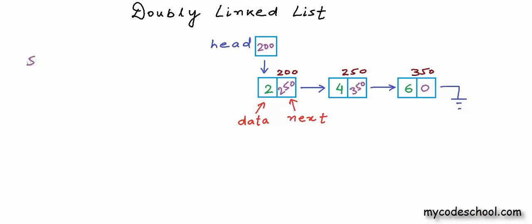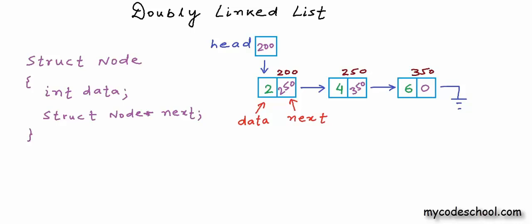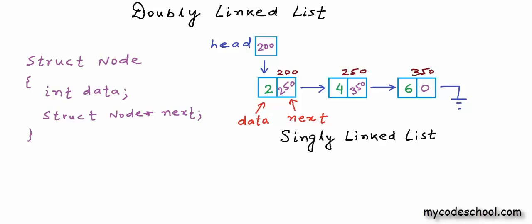In a real program, the node for the linked list I am showing here will be defined like this — this is how we have defined nodes so far in all our lessons. We have two fields here: one of type integer to store data, and another of type pointer to node, struct node asterisk. I am calling this field next. When we say linked list, by default we mean such a list that we can also call a singly linked list.